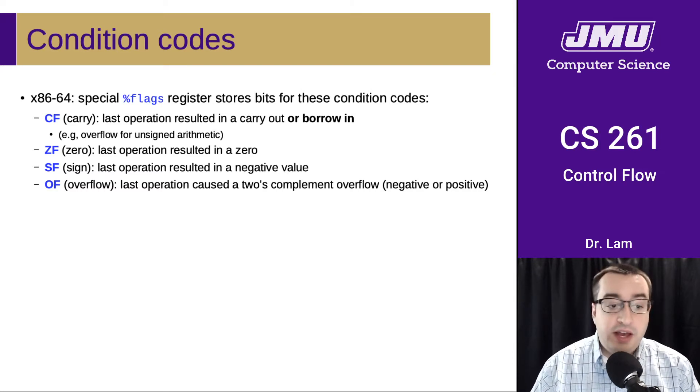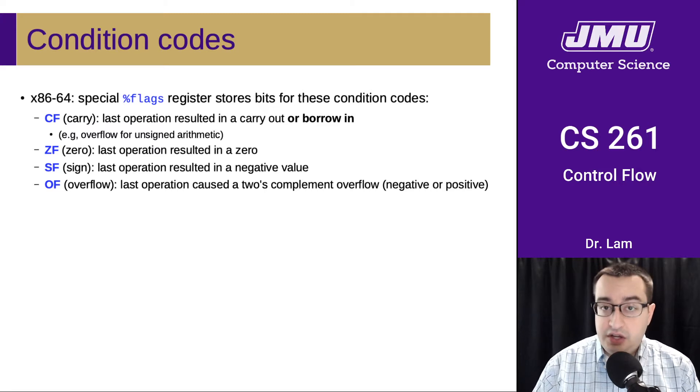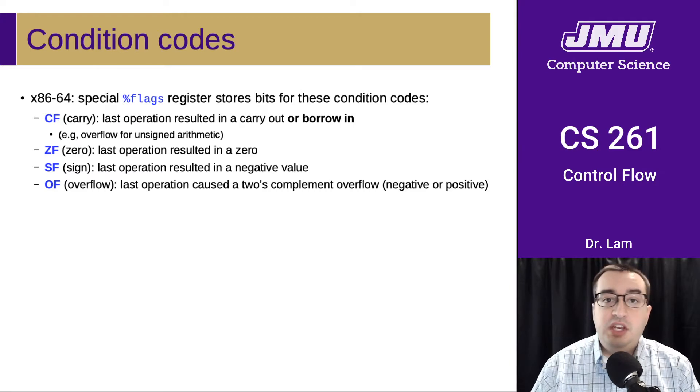There's a zero flag, which indicates that the last operation resulted in a zero. There is a sign flag indicating that the last operation resulted in a negative value. This would assume that the value is a signed value, so we can just check the first bit. And then the overflow flag, which indicates that the last operation caused a two's complement overflow, either positive or negative.